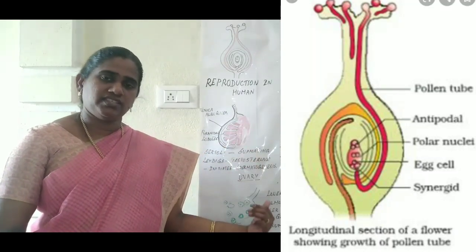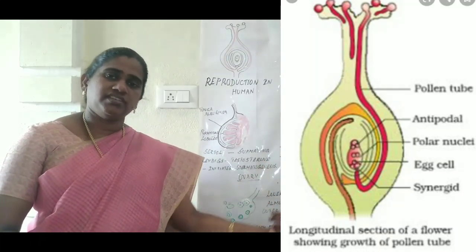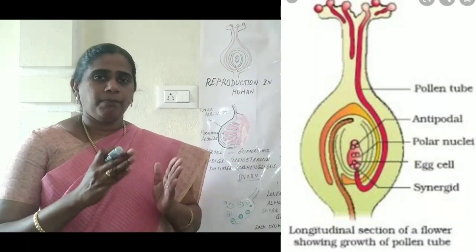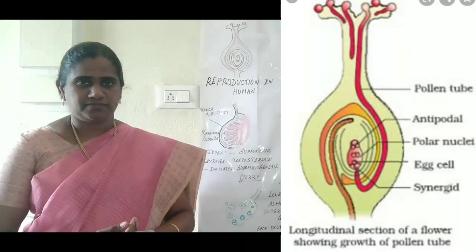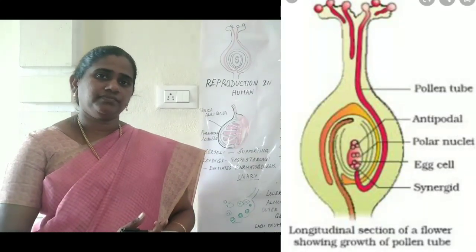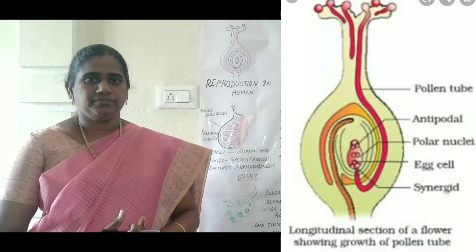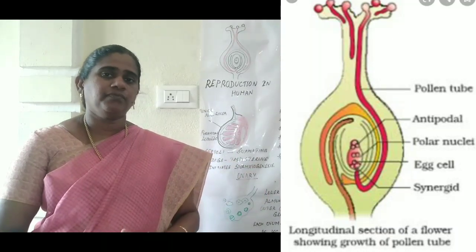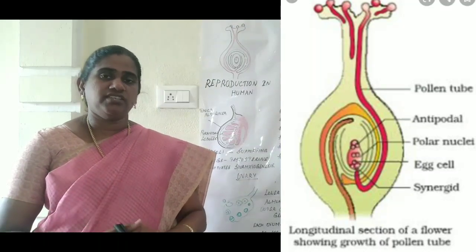This pollen tube now passes through the style region. Gradually, little by little, it grows and reaches the ovule. As it enters into the embryo sac, the pollen tube bursts open and releases the two male gametes into the embryo sac.